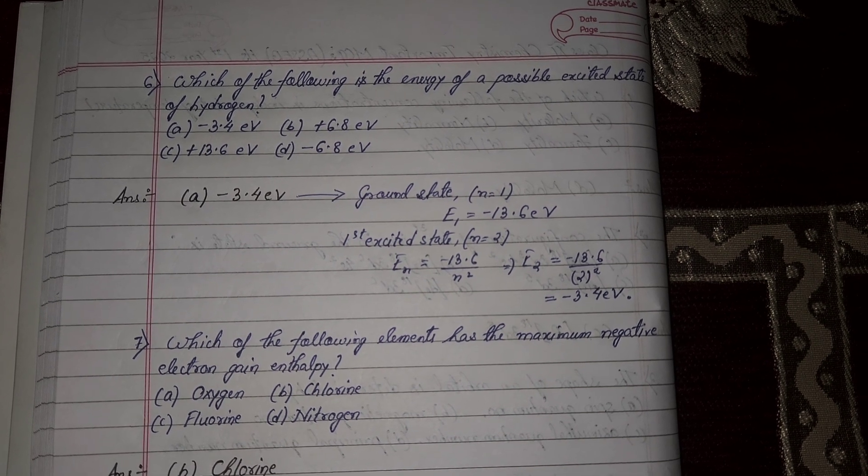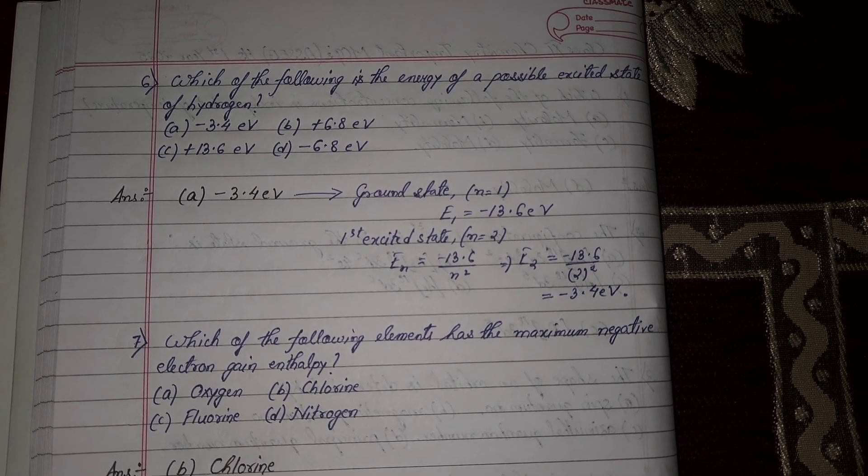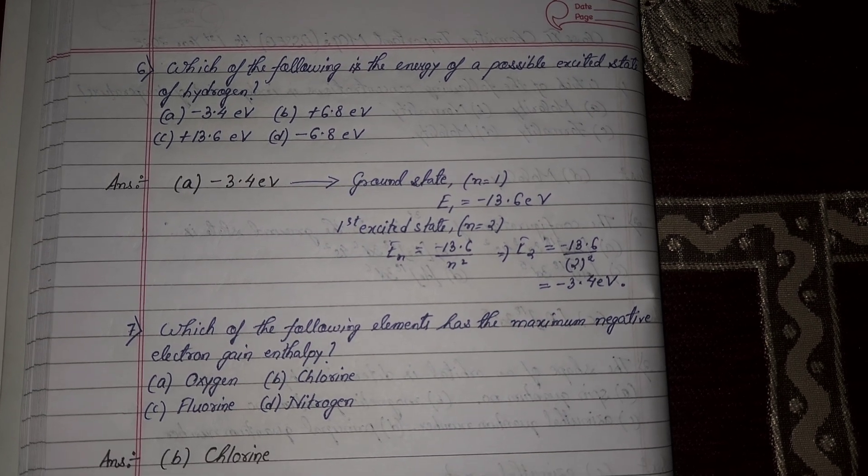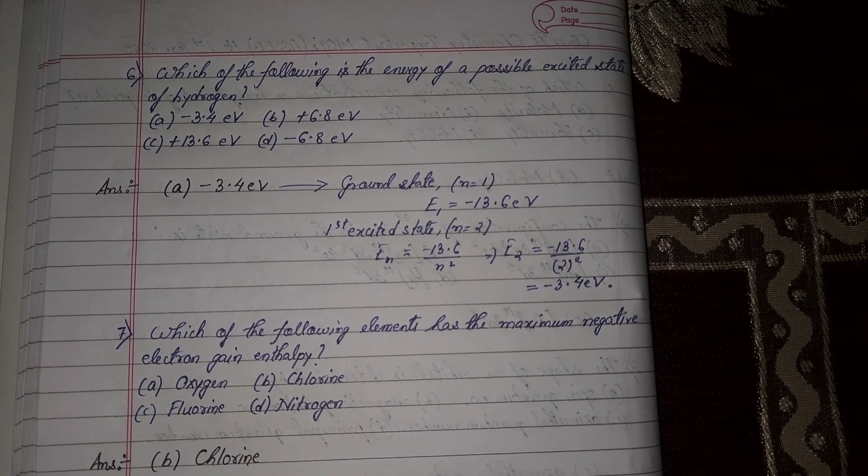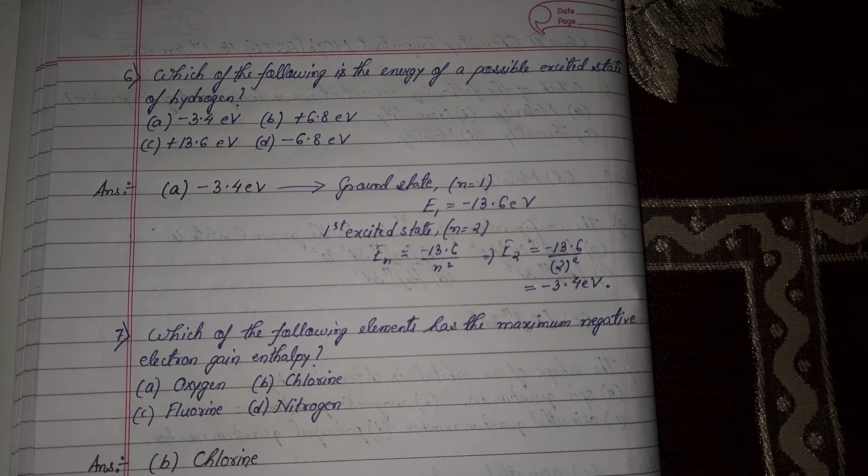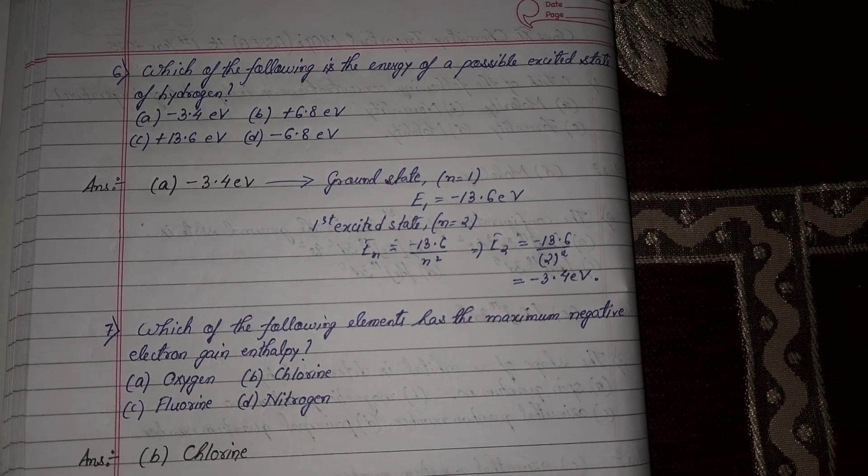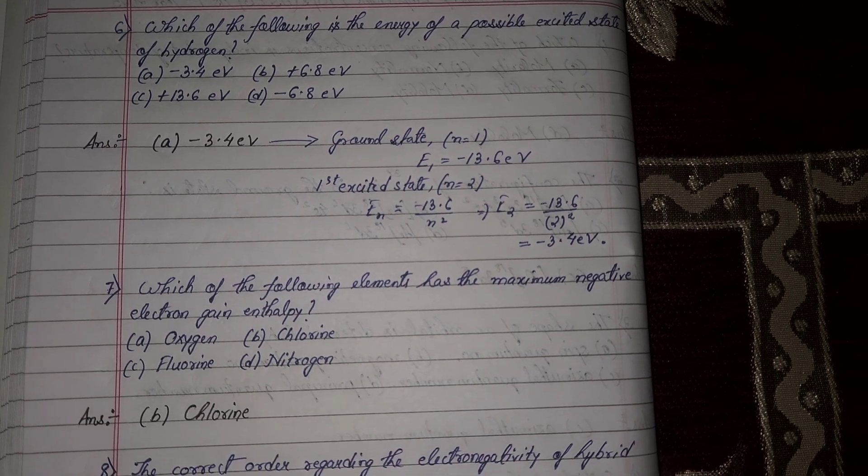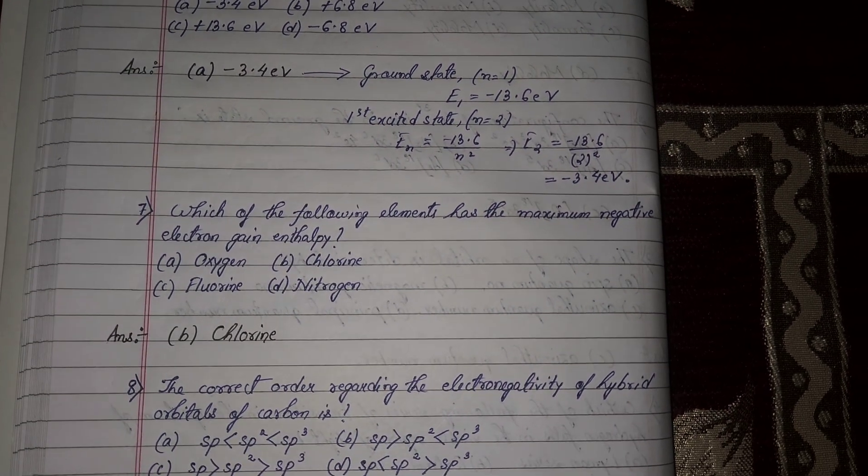Ground state N equal to 1, so energy equal to minus 13.6 electron volt. First excited state N value 2, so energy equal to minus 13.6 divided by N square, minus 13.6 divided by 4 equal to minus 3.4 electron volt.